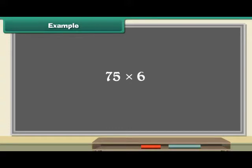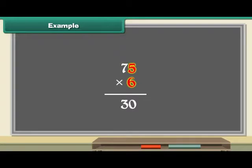Example. Multiply 75 by 6. Place the numbers one below another. Multiply 5 by 6. 5 sixes are 30. Place 0 below 6 and 3 above 7. Multiply 7 by 6. 7 sixes are 42. Add 42 and 3. Write 45 below 7. The answer is 450.